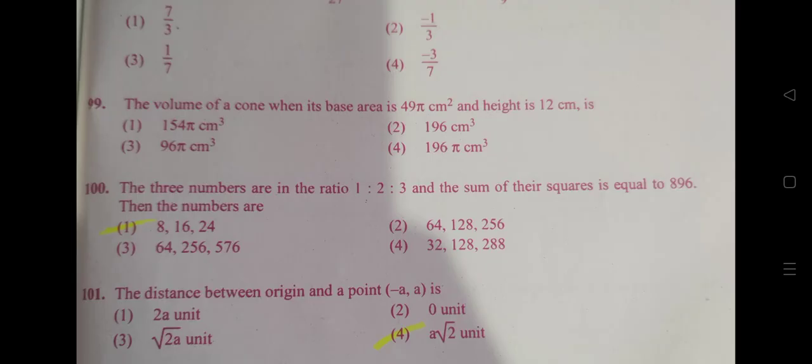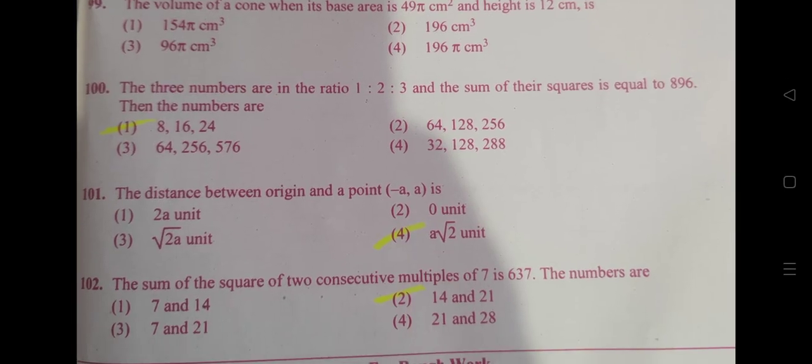The three numbers are in ratio of 1:2, 2:3, and the sum of their squares is equal to 896. The numbers are option 1: 8, 16, 24.